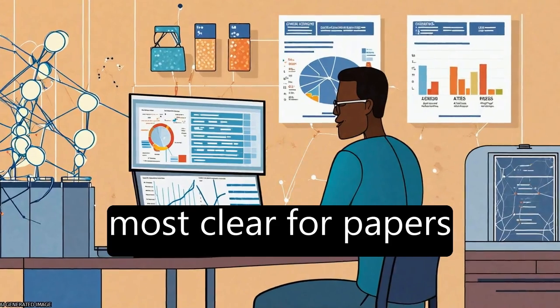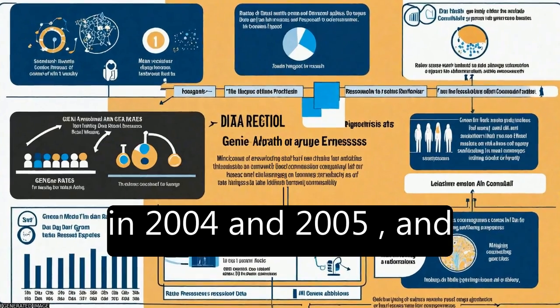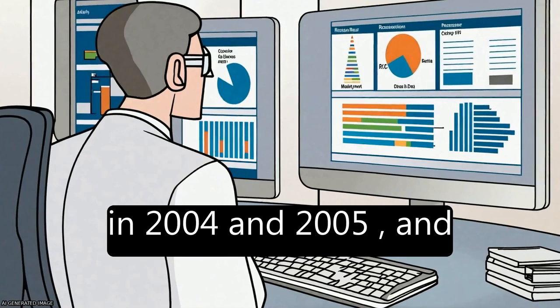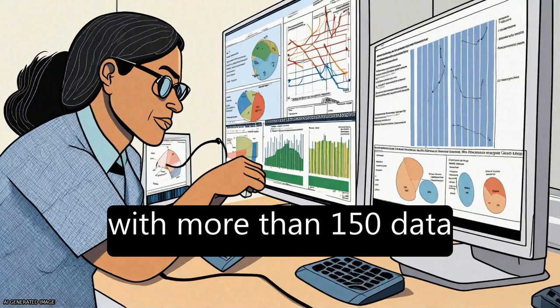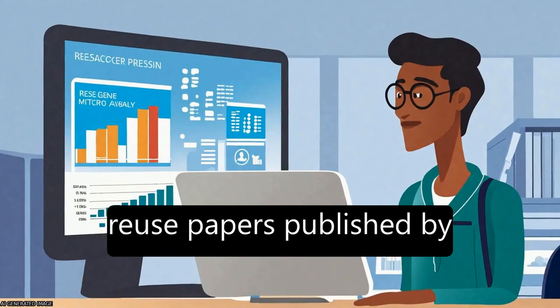The citation benefit was most clear for papers published in 2004 and 2005, and the level of third-party data reuse was high, with more than 150 data reuse papers published by year 5.